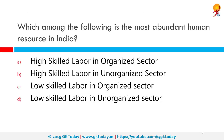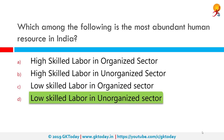Which among the following is the most abundant human resource in India? The correct answer is low-skilled labor in the unorganized sector — cheap labor. Labor is cheaper in India compared to other developed countries. Since India is a highly populated country, there is an excess supply of labor, and since private investment in India is also low, there are fewer job opportunities for the masses.